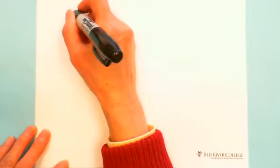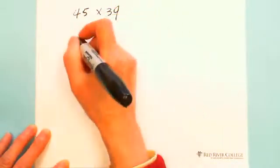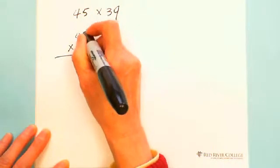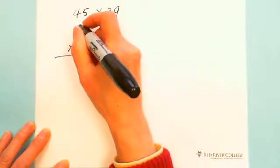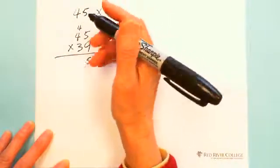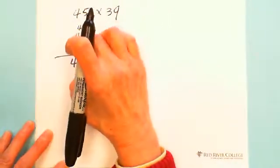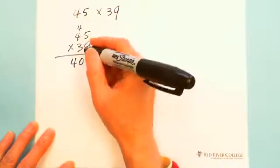There are several ways to do multiplication because the problem when people do multiplication is carrying over the number. For example, you multiply say 45 × 39. 5 × 9 is 45. You mark down 5 and carry 4. Then 4 × 9 is 36 plus 4 is 40. This is carry over.